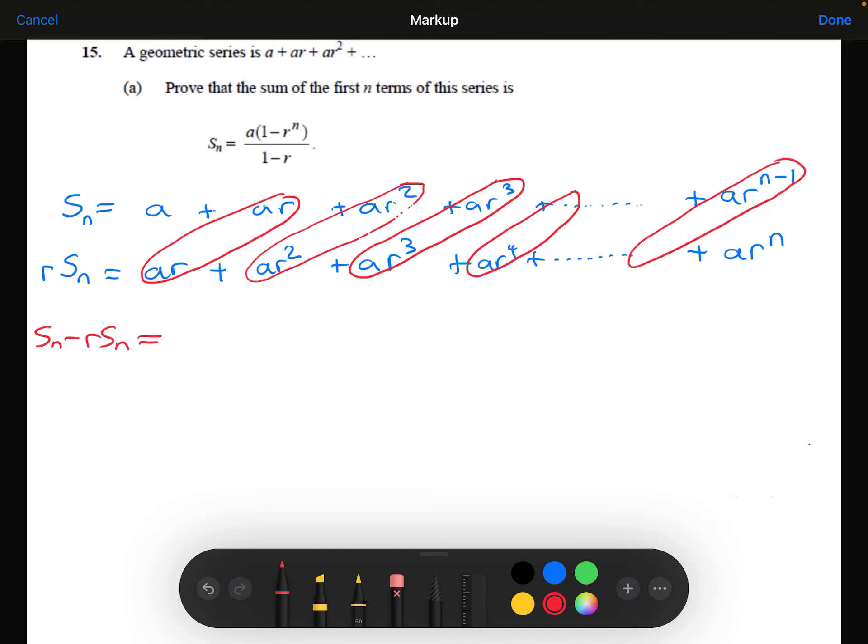And the only terms that won't cancel out will be the A. And I'm going to take away the AR to the power n. So the only terms I'll be left with is the A from the top, and I'm taking away the AR to the n from the bottom. So we've managed to turn this whole long sum into just this.